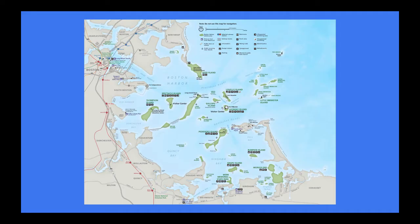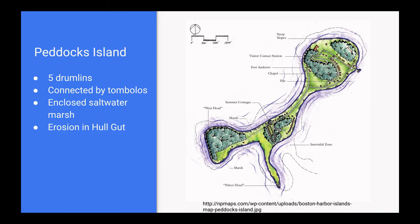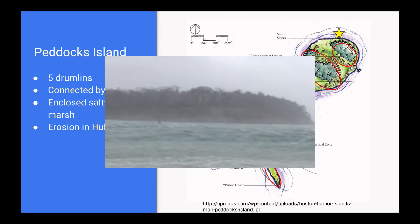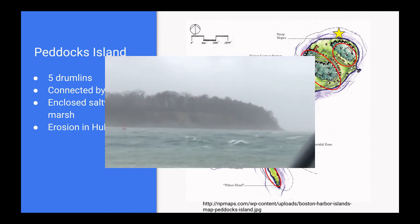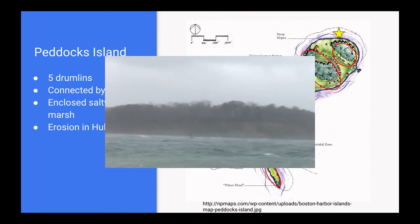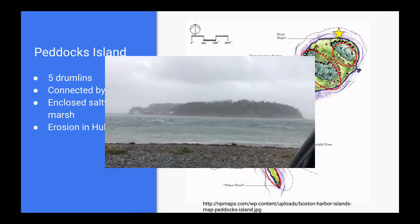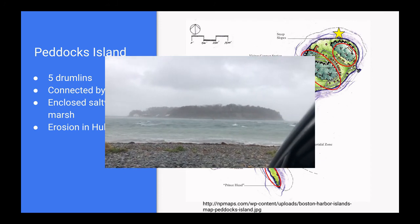Next we'll look at Peddocks Island, which is located here. Just like Lovells, Peddocks was created by the combination of five separate drumlins through erosion and the creation of tombolos, which are located here. I'll also draw your attention to the inlet, which is located on the northeast side of the island. A lot of water moves in and out of this inlet during tidal exchanges, and also during nor'easters this area gets heavily eroded.